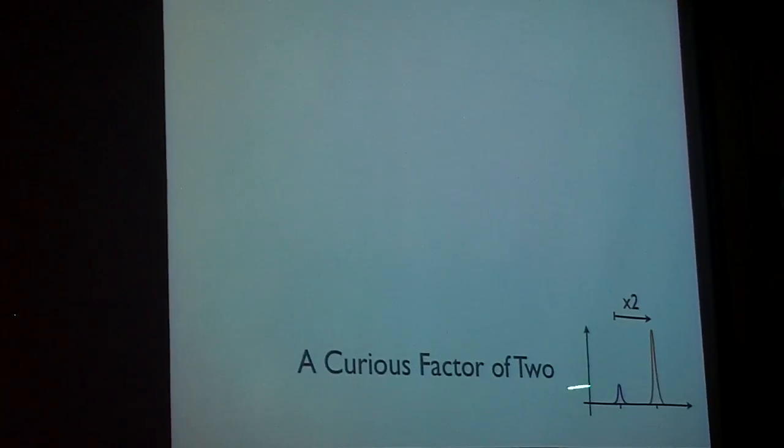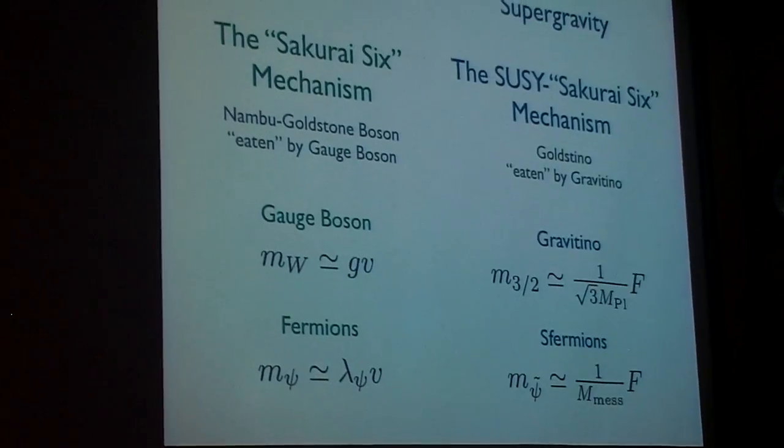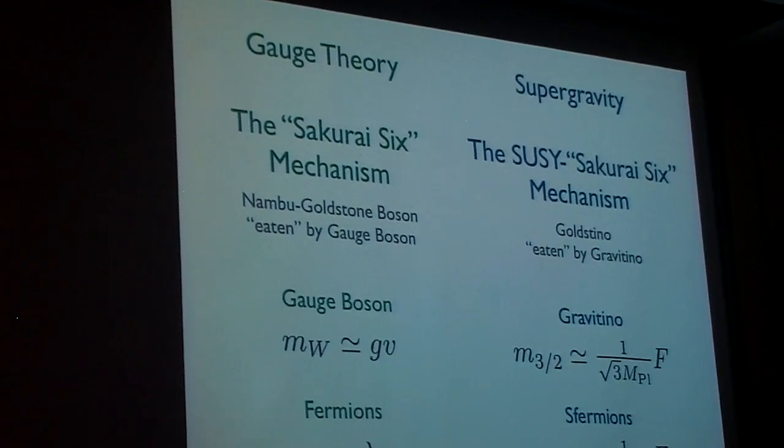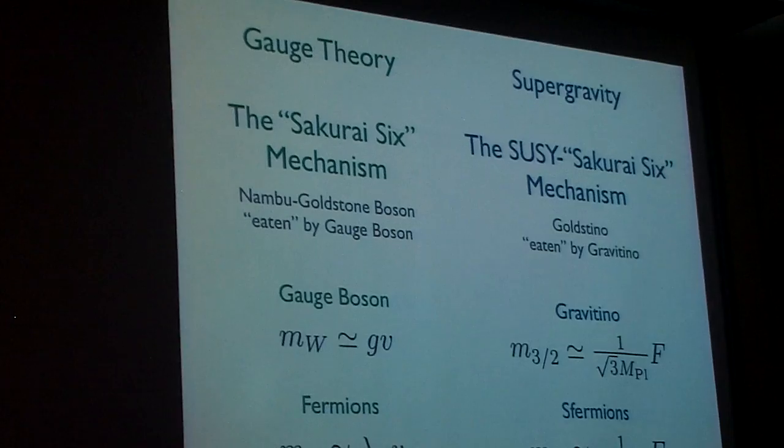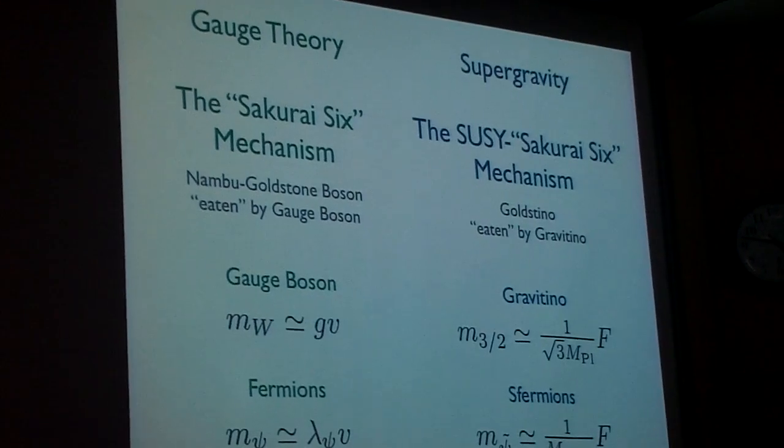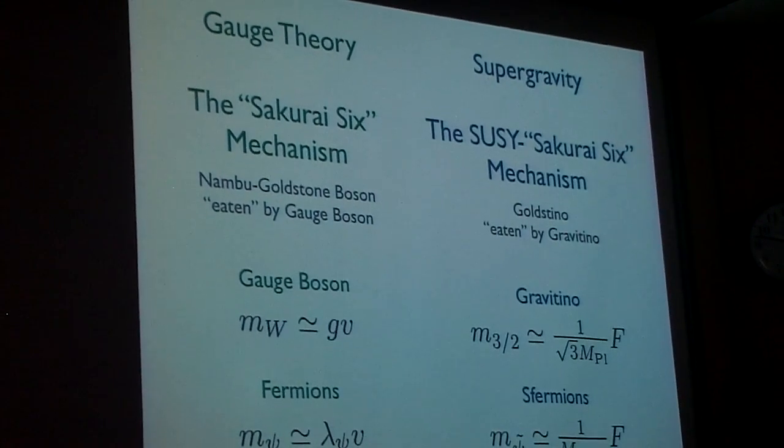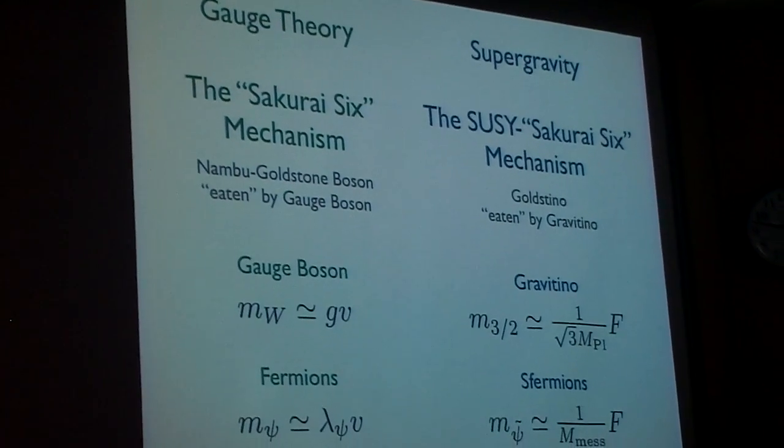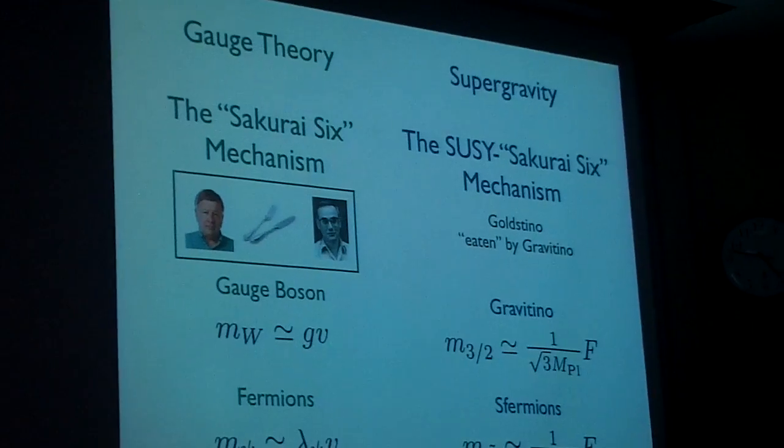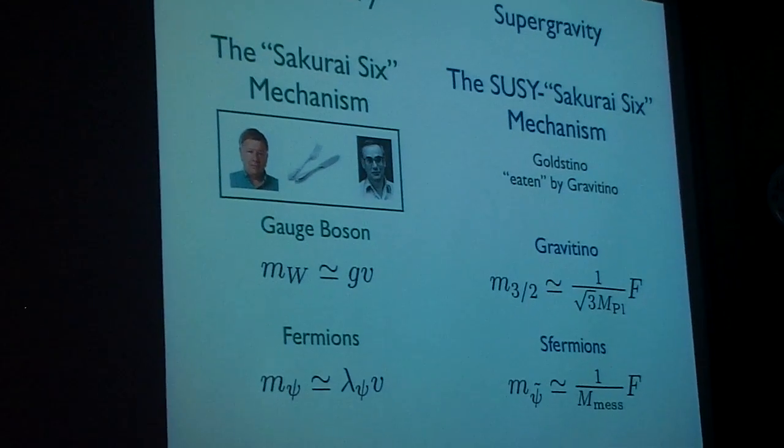So before I launch into this, let me first tell you about some of the properties of a theory that has two Goldstinos. And to do that, and tell you about this curious factor of two, I have to remind you of the Higgs mechanism or the Sakurai-Six mechanism. Okay, so we've discussed this a number of times. Let me just say the words one more time. What's remarkable and what we're celebrating today is the fact that if you have a spontaneously broken symmetry, but that symmetry corresponds to a gauge symmetry, then the would-be Nambu Goldstone boson from that breaking gets eaten by the gauge boson, giving that gauge boson mass.